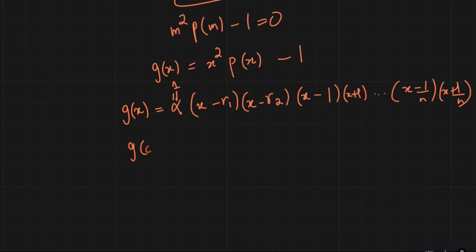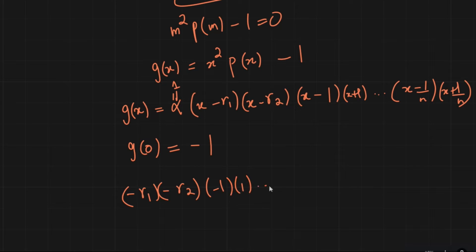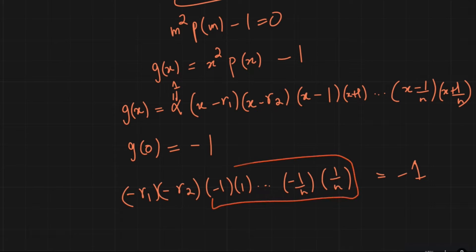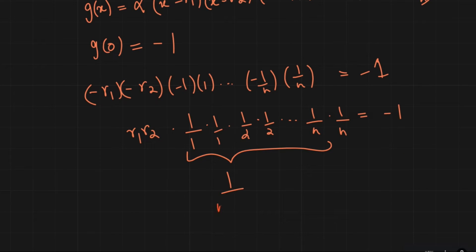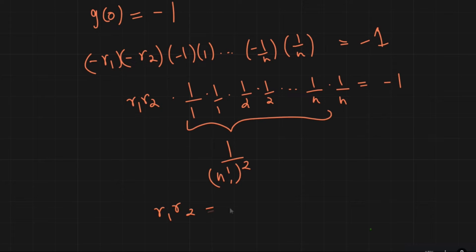One useful observation: g(0) = 0² times whatever minus 1 = -1. But according to the factored formula, g(0) = (-r1)(-r2)(-1)(1)···(-1/n)(1/n) = -1. Since n is even, the n minus signs from the ±1/k roots cancel out, leaving r1·r2·(1/n!)² = -1, so r1·r2 = -n!².